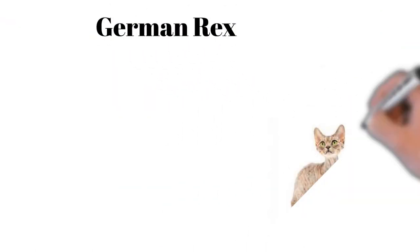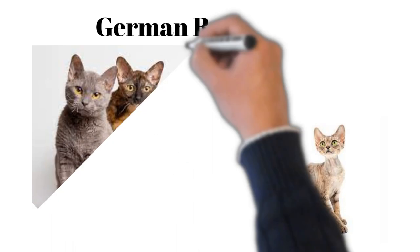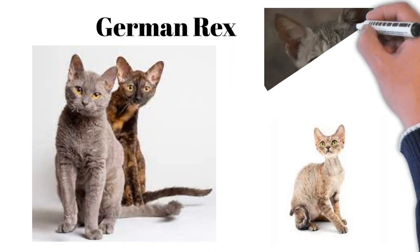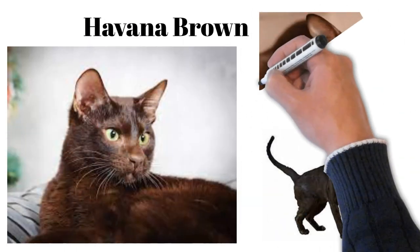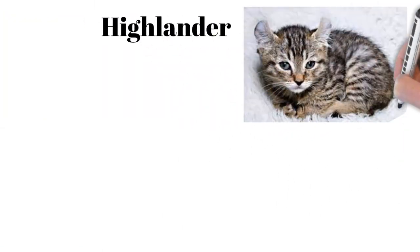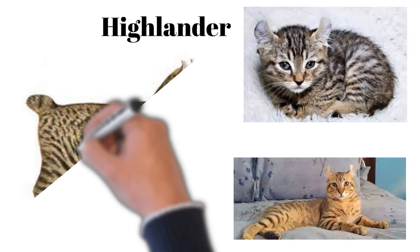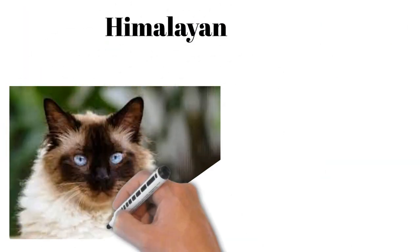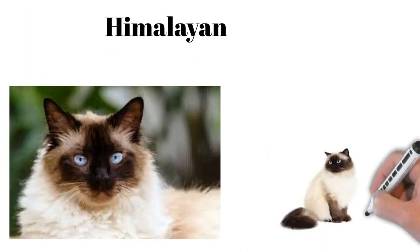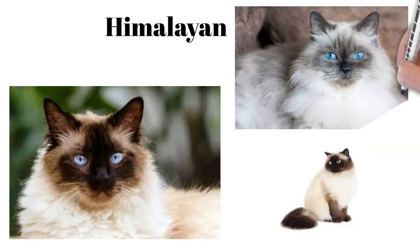German Rex: curly coat, friendly, active, enjoys human companionship. Havana Brown: chocolate brown coat, expressive green eyes, affectionate, intelligent. Highlander: ears curl back, friendly, playful, enjoys human interaction. Himalayan: Persian-Siamese mix, long-haired, blue-eyed, sweet, placid.